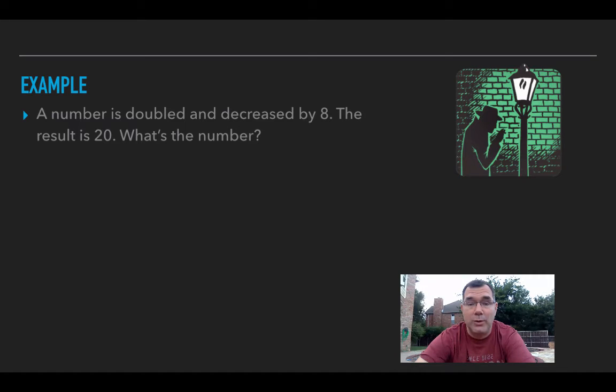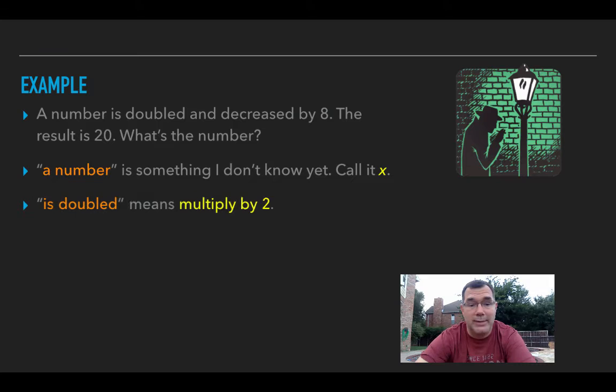What we need to do is walk through the sentence and convert everything from English to algebra, and make an equation out of it. When we say a number, that's something I don't know, so we're going to call that x or give it whatever letter you want, just as long as it's not a number, because we don't know what that number is yet.